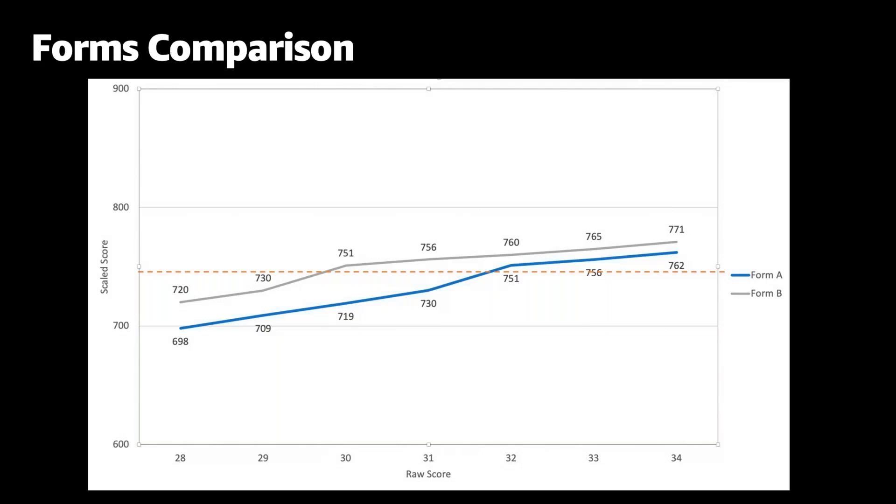Another reason we use scale scoring is to ensure candidate scores are consistent between exams. For example, while the questions are completely different on our current Solutions Architect Associate exam than on the 2018 version, the passing score is still 720. However, a new exam version could contain slightly more or less difficult questions, which means the passing raw scores could be different between the versions.